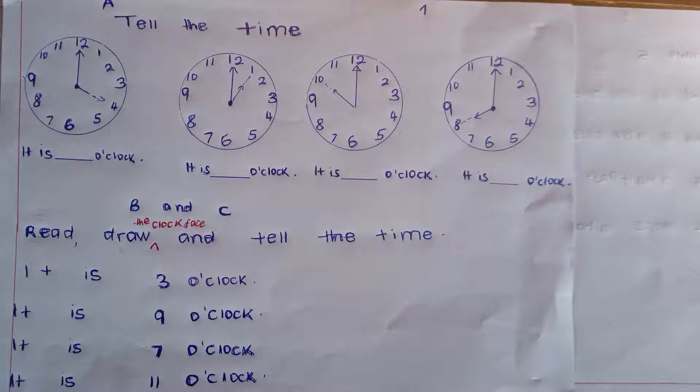Then, groups B and C. You were supposed to read, draw the clock faces and tell that time. Unfortunately, I can't look at your circles. I can't tell how you wrote inside. But let the person there help us mark this work.